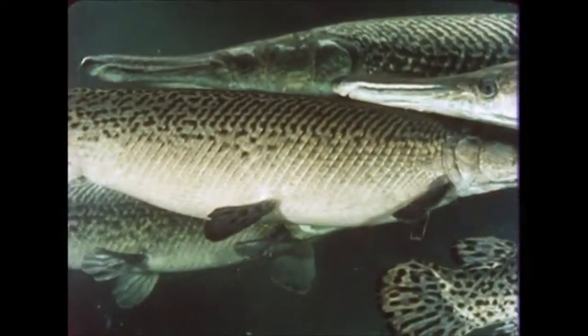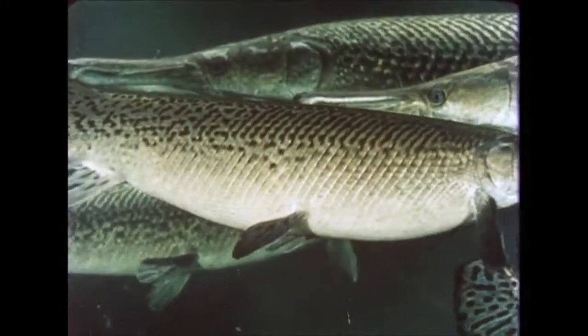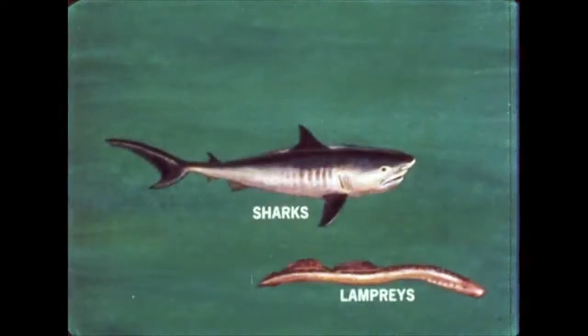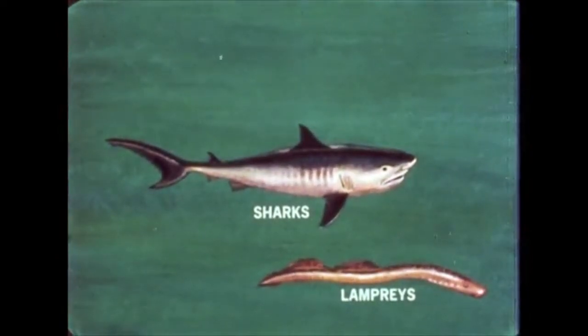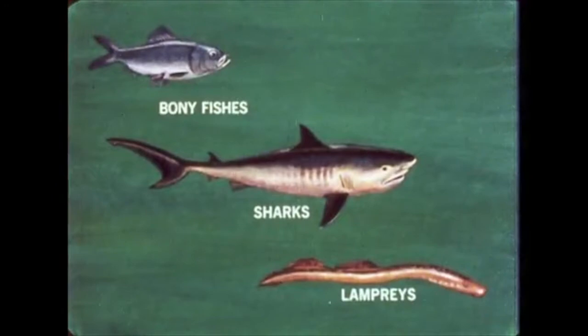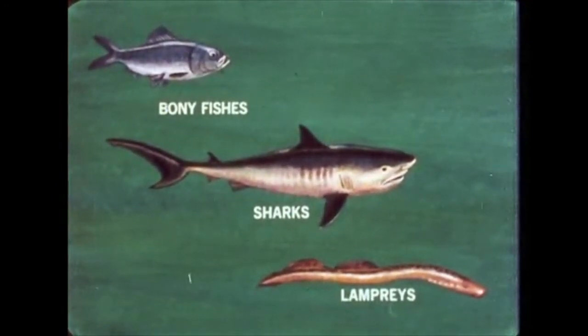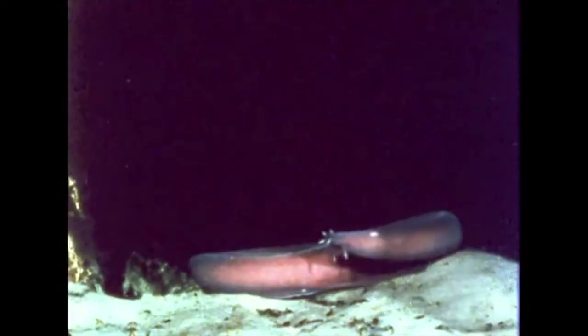The fish that are alive today fall into three major groups: the lampreys and hagfish; the sharks, skates and rays; and the bony fishes, such as the herring. We'll start with the most primitive of all, the lampreys and hagfish.